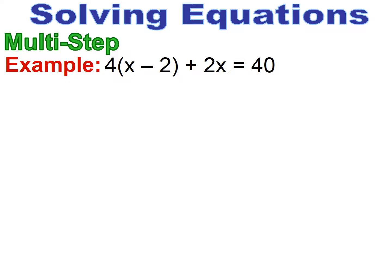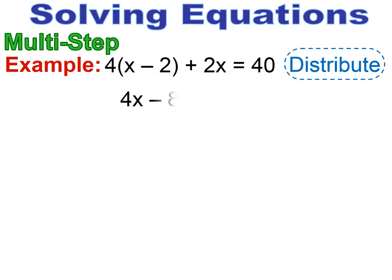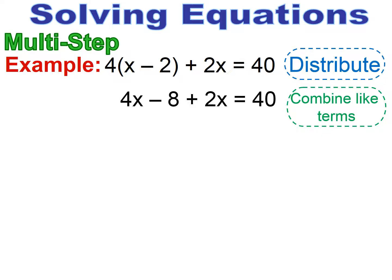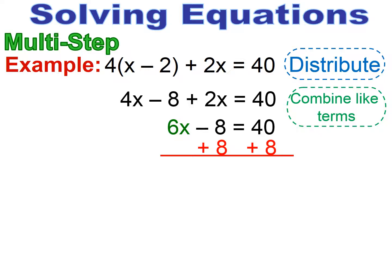Now we have distributive property and multiple same variables on the same side of the equal sign. The order is: do the distributive property first — whenever there are parentheses, do that first. So I distribute: 4 times x is 4x, 4 times 2 is 8, and I bring down the plus 2x equals 40. Now I combine like terms: 4x plus 2x gives me 6x, minus 8 equals 40. I add 8 to both sides, then divide both sides by 6, and x equals 8.